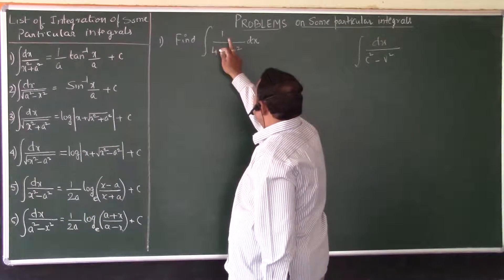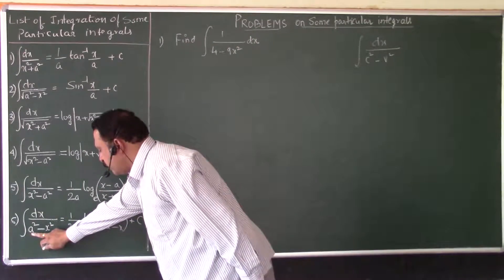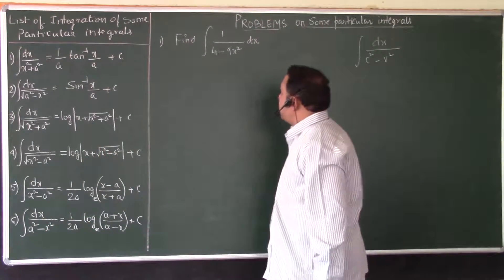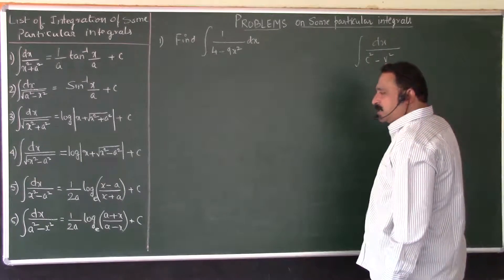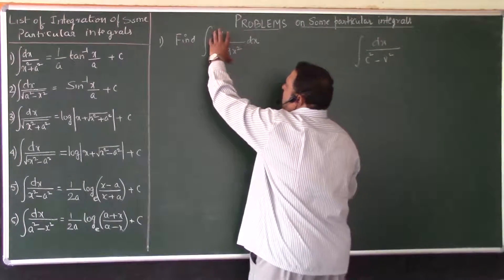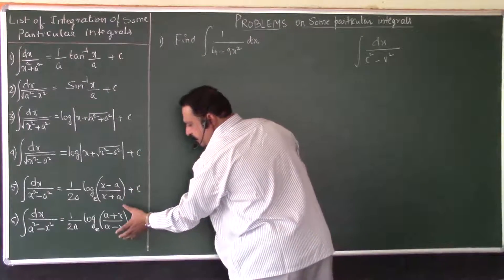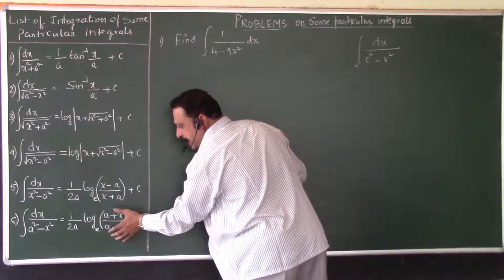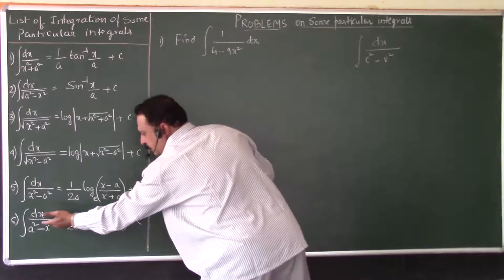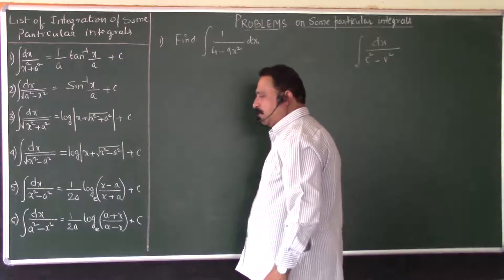Numerator is dx, yes dx and denominator is constant square minus variable square. So the answer of this integration should have to match the result of the integration of dx by a square minus x square.